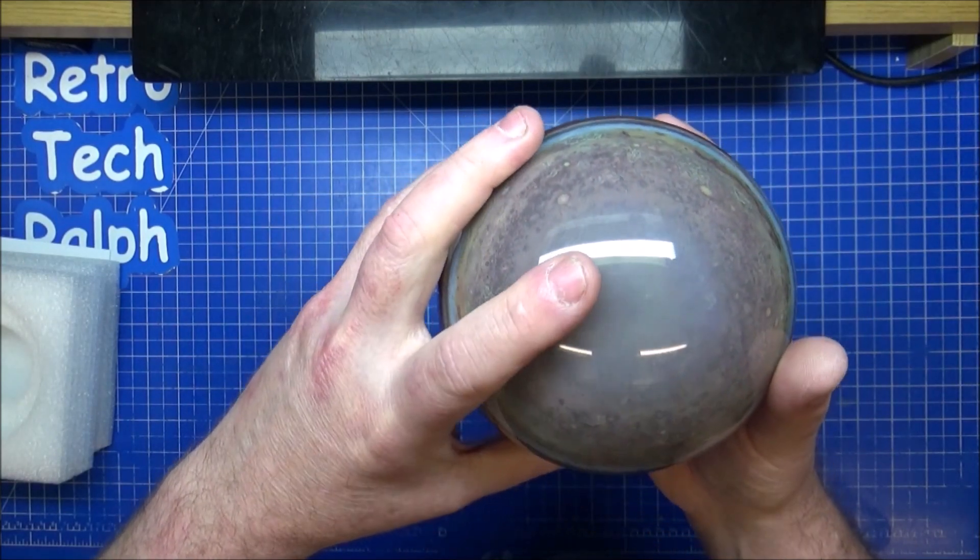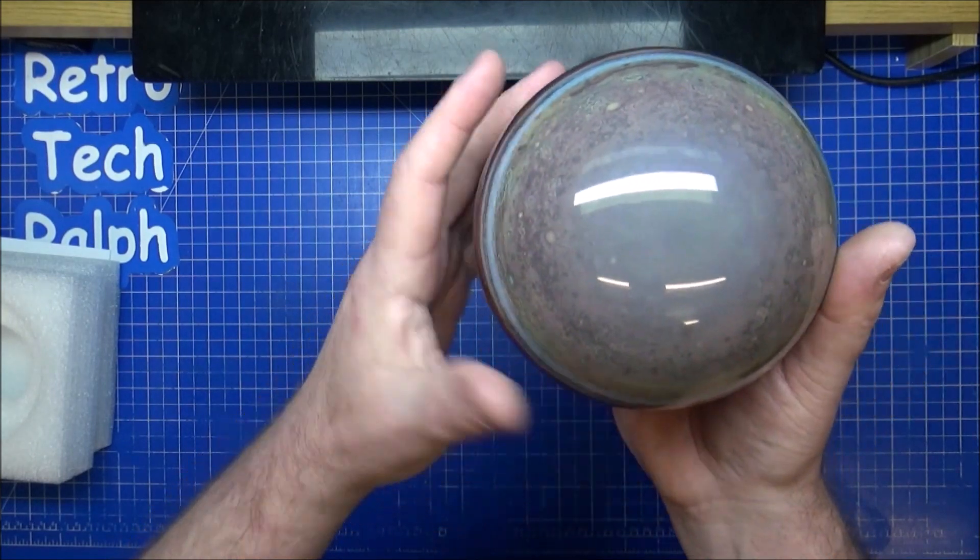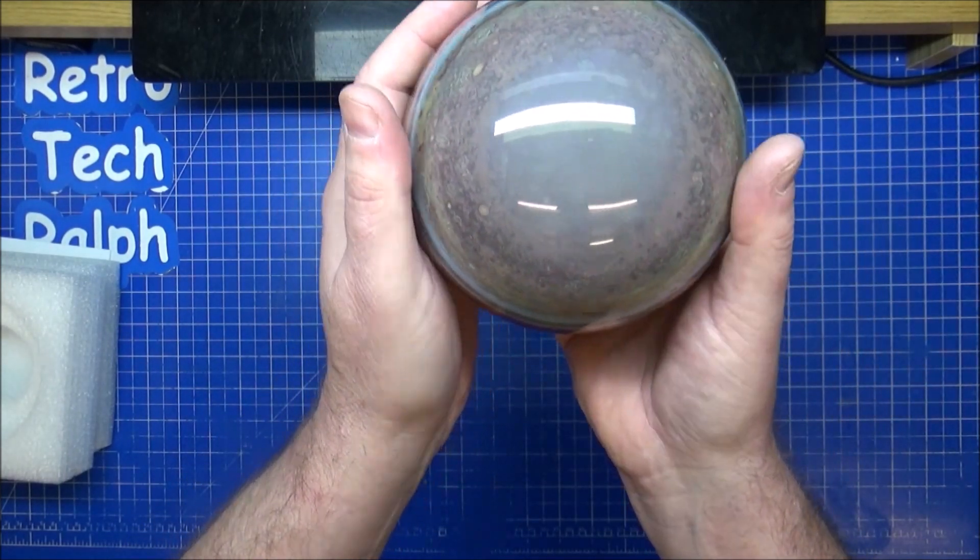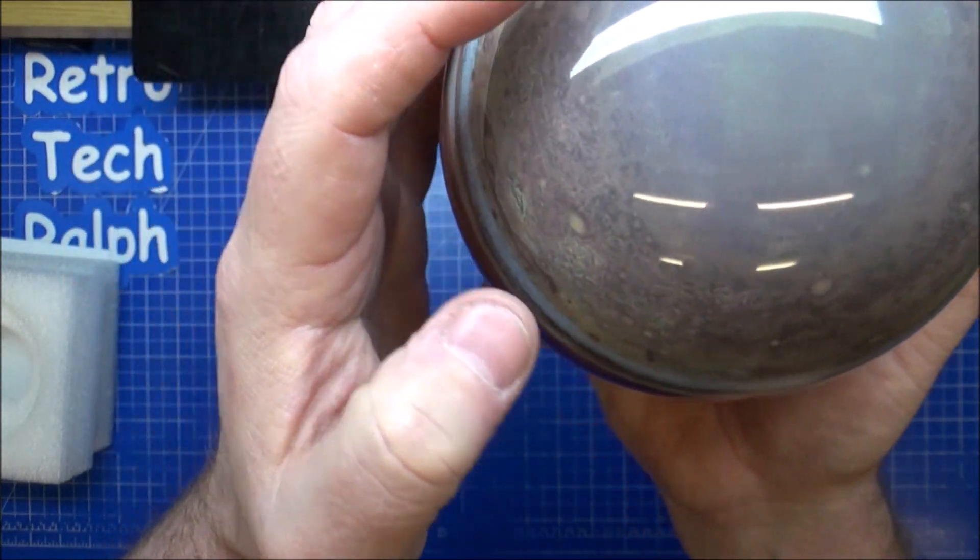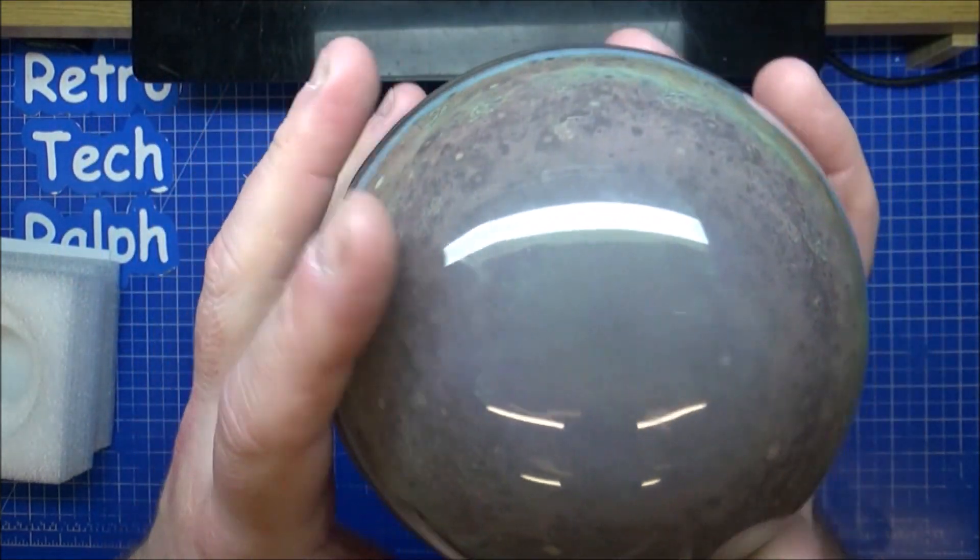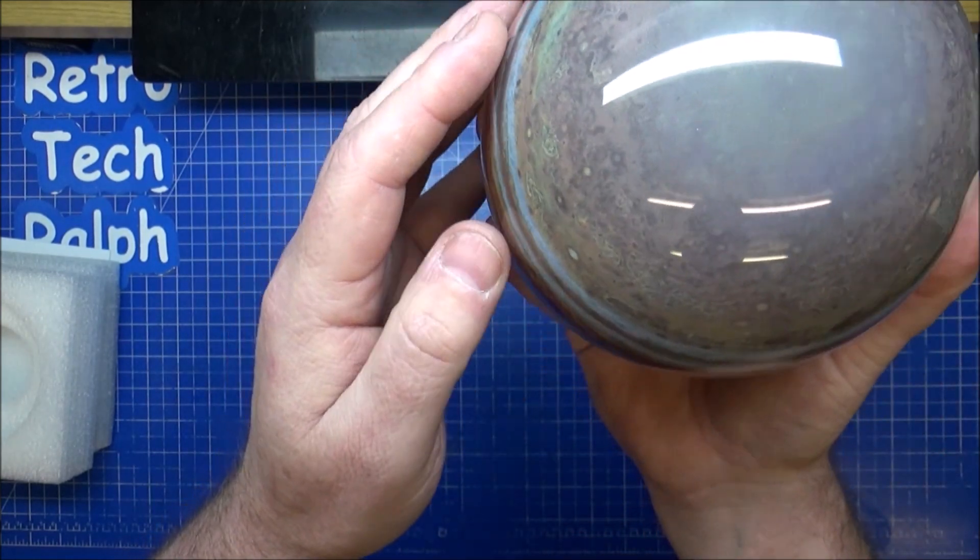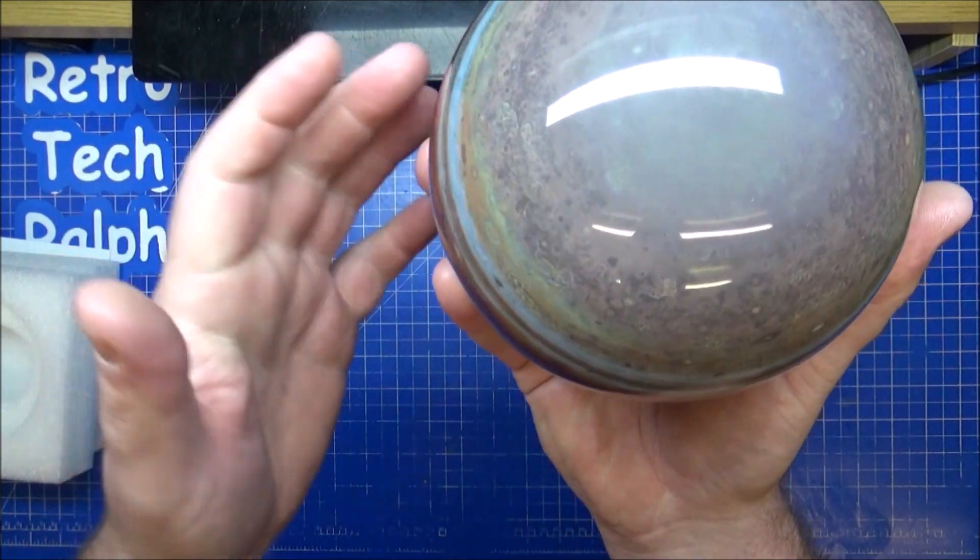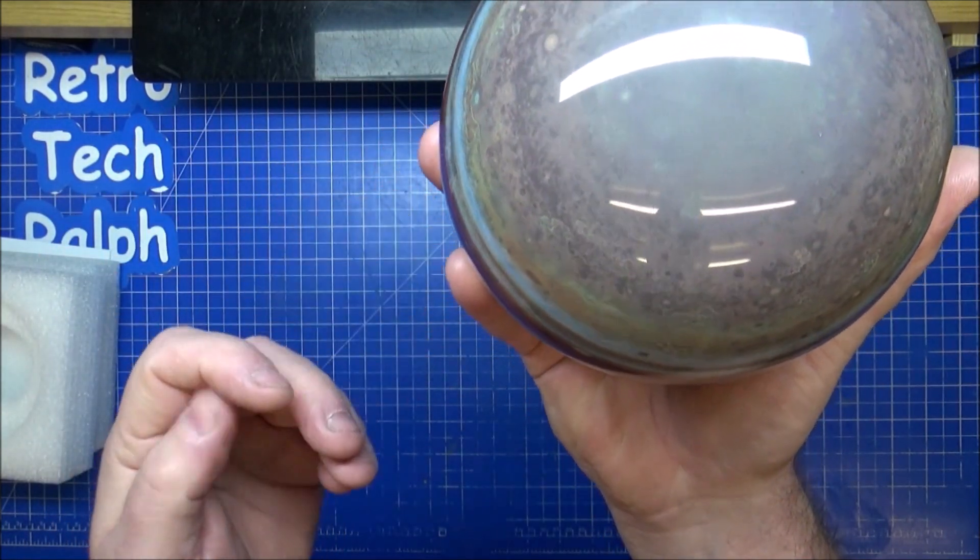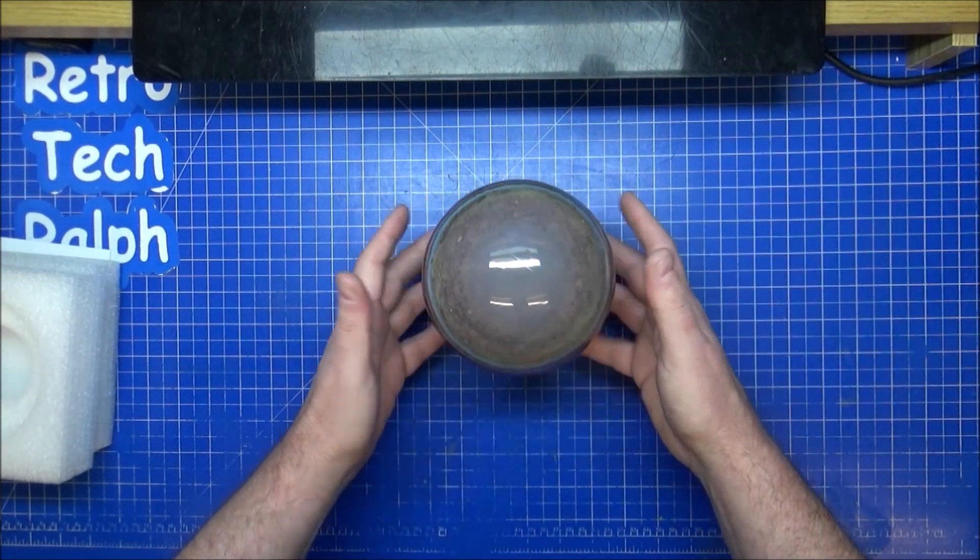You see all these little circles—it looks like craters but they're all tornadoes, hurricanes. It's a massive ball of gases churning around. It is absolutely fascinating Jupiter.